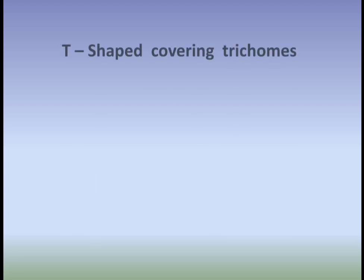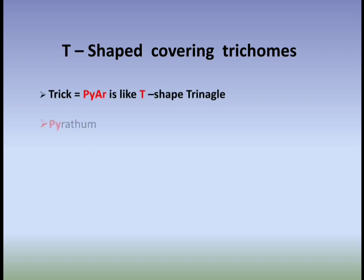Next are T-shaped covering trichomes. The trick is: 'PR is like a T-shaped triangle.' Here, Py denotes Pyrethrum and Ar denotes Artemisia. These two drugs contain T-shaped covering trichomes. Students, try to note down these points as they are very important.